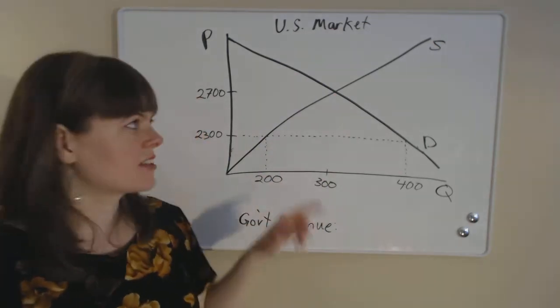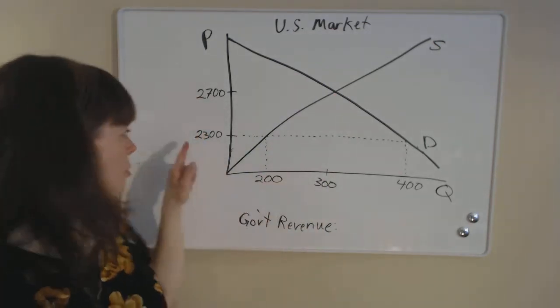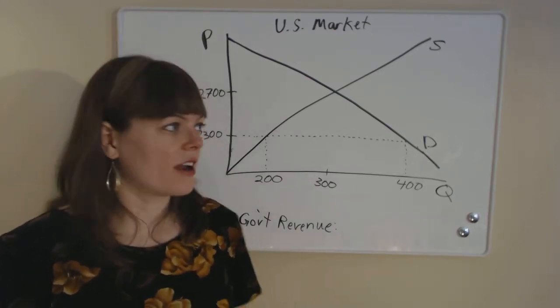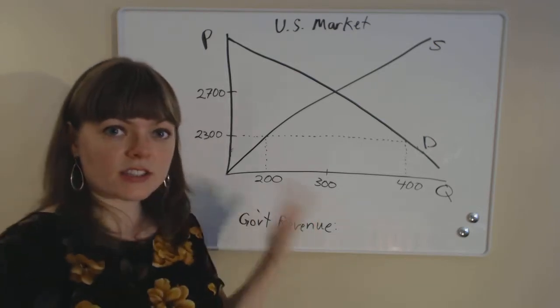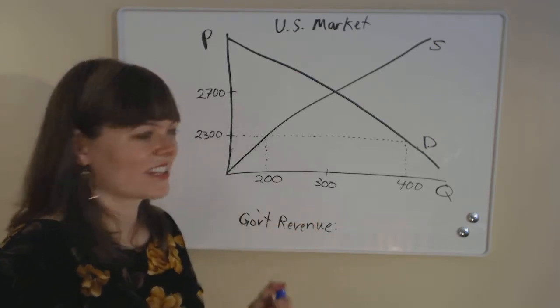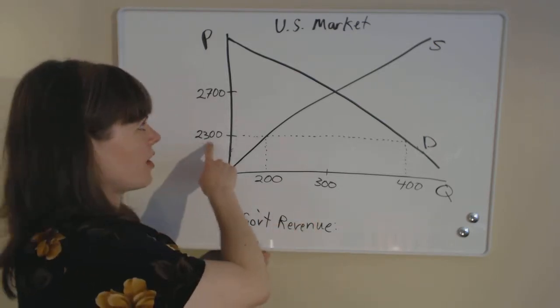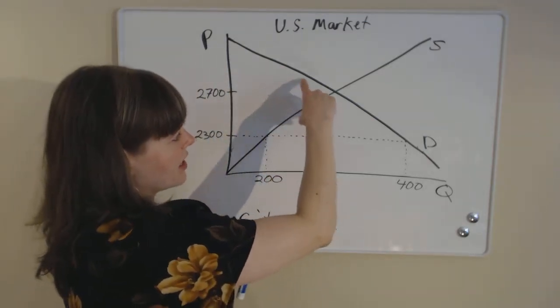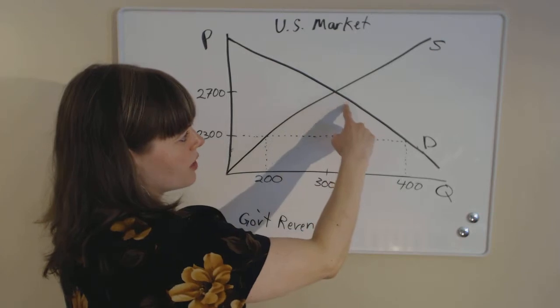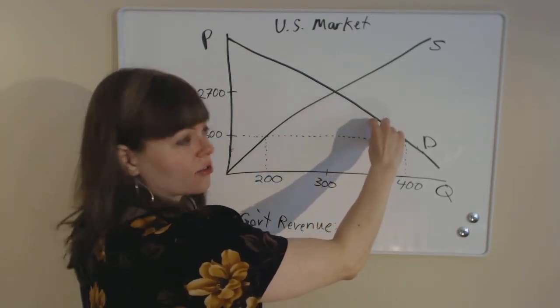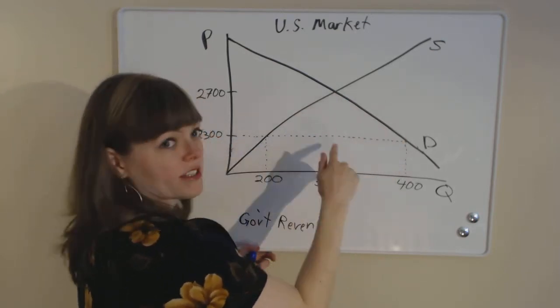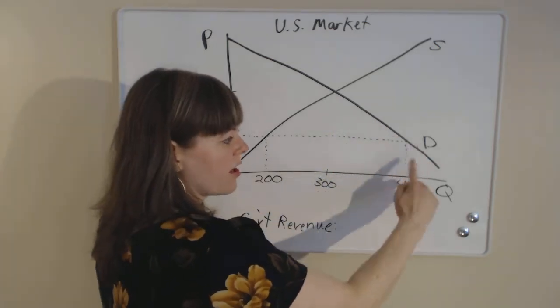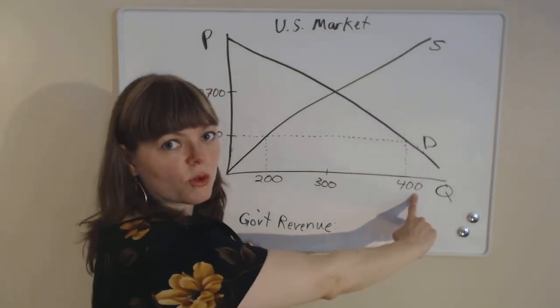But when we open markets, no consumer is going to buy for more than $2,300 if they can get an engine for $2,300 from these countries abroad. So how many consumers are willing to consume for a price of $2,300? Well, we check each consumer along the axis, and each of these consumers is willing to buy for a price of $2,300, because their value of that product is greater than $2,300.